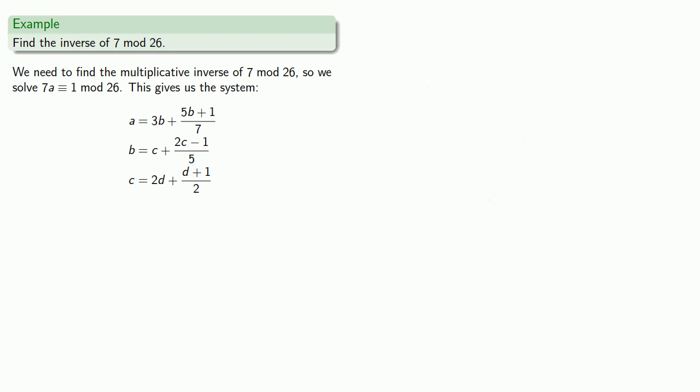We want (d plus 1) over 2 to be an integer, so we need some integer e to be equal to (d plus 1) over 2. We'll apply our Diophantine method and find d is equal to 2e minus 1.